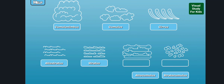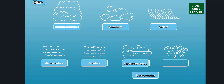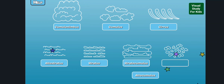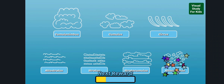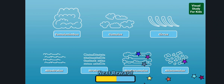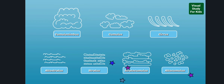Altocumulus. Stratocumulus are low, puffy, gray clouds. They may produce a little rain. Altocumulus are middle-level clouds that are small, white, and puffy.